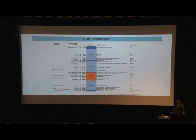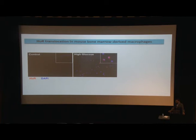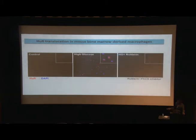We were curious what is happening under hyperglycemia conditions. In control conditions, HUR is mostly localized in the nucleus. When we expose these cells to high glucose for 24 to 48 hours, HUR expression is also seen in the cytoplasm. Since PKC phosphorylates HUR and leads to nuclear-to-cytoplasmic translocation, using a PKC delta inhibitor should inhibit high glucose-induced translocation — and that is what we observed.